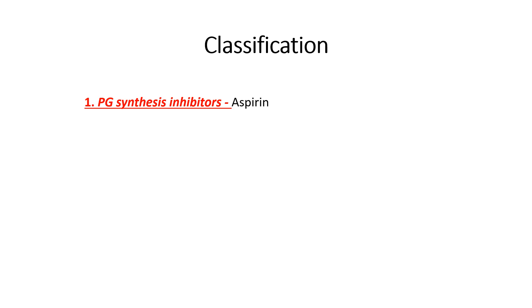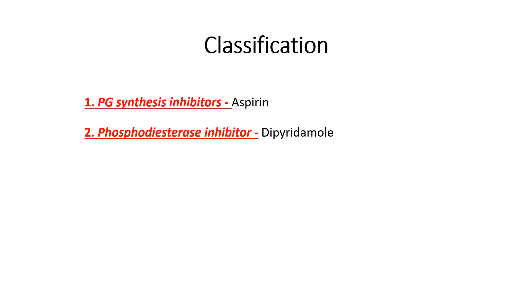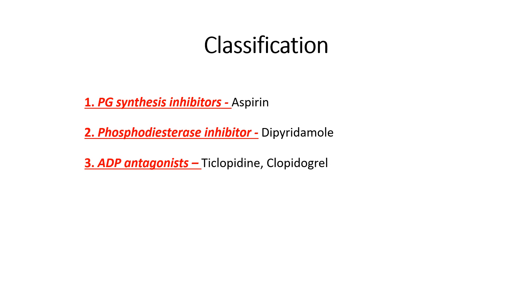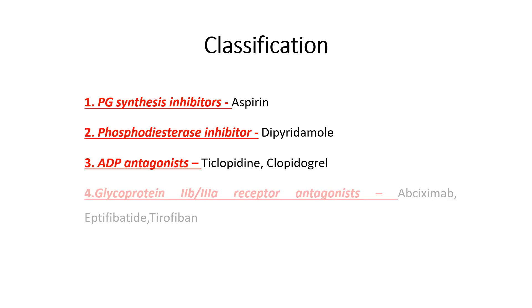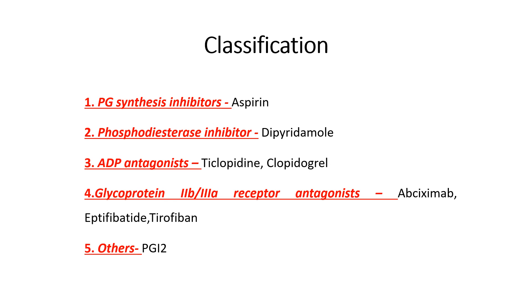The classification of antiplatelet drugs: First, PG synthesis inhibitors — example is aspirin. Second, phosphodiesterase inhibitors — example is dipyridamole. Third, ADP antagonists — examples are ticlopidine and clopidogrel. Fourth, glycoprotein 2B3A receptor antagonists — examples are abciximab, eptifibatide, and tirofibane. The last class is other drugs, which include PGI2.